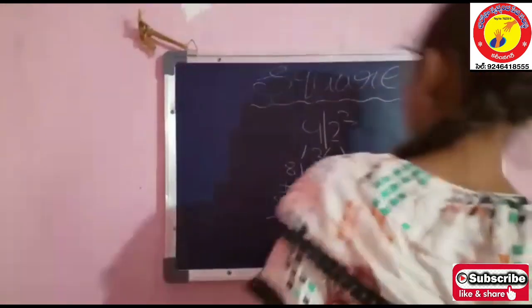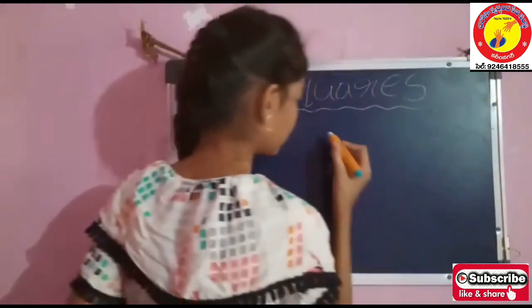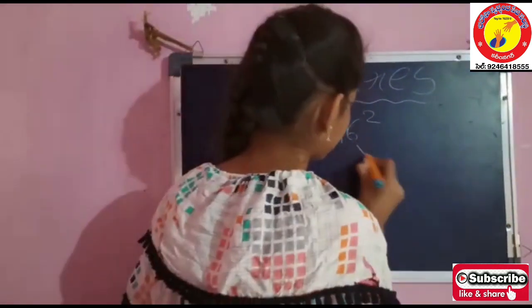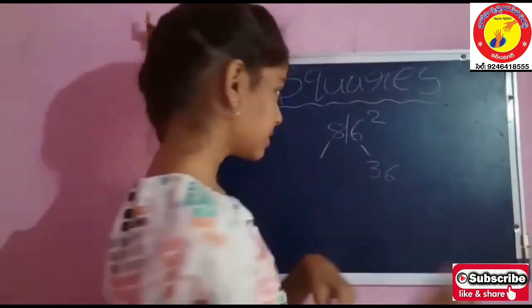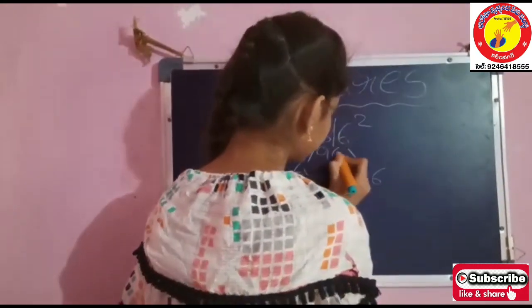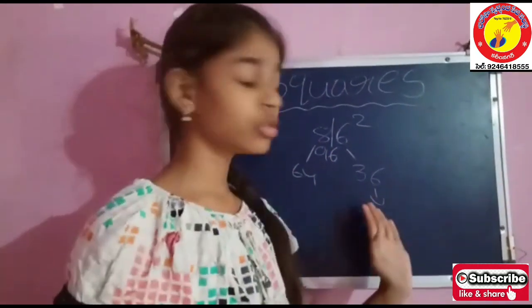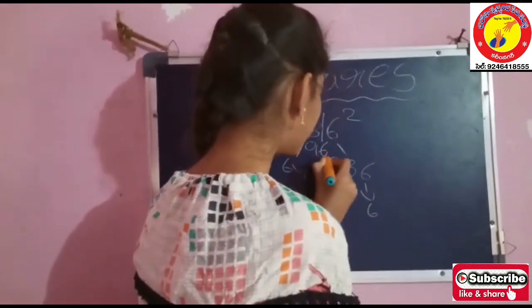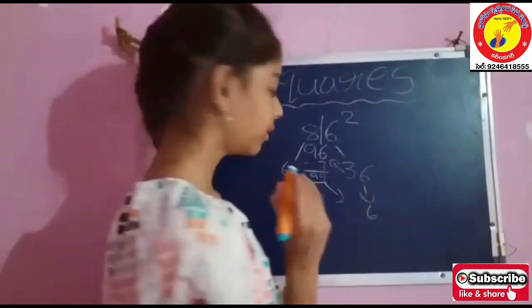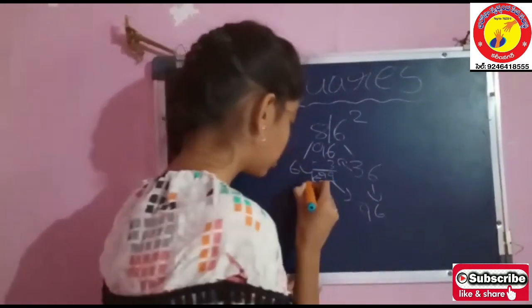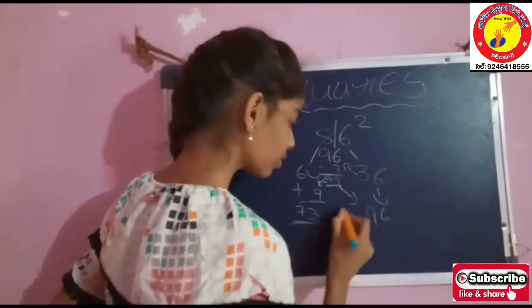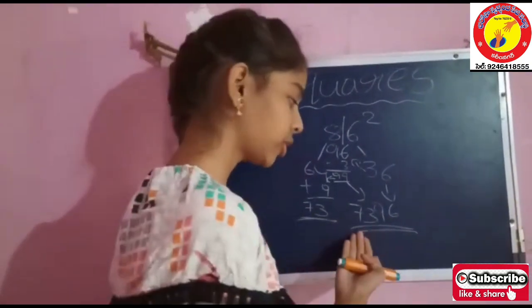Let us try one more example: 86 squared. Again we should separate. 6 x 6 is 36. 8 x 6 is 48, and 48 x 2 is 96. So we should drop 6 here and add 9 to the next. 96 plus 3 is 99 — we drop 9 here. Then 64 plus 9 is 73. So our answer is 7,396.